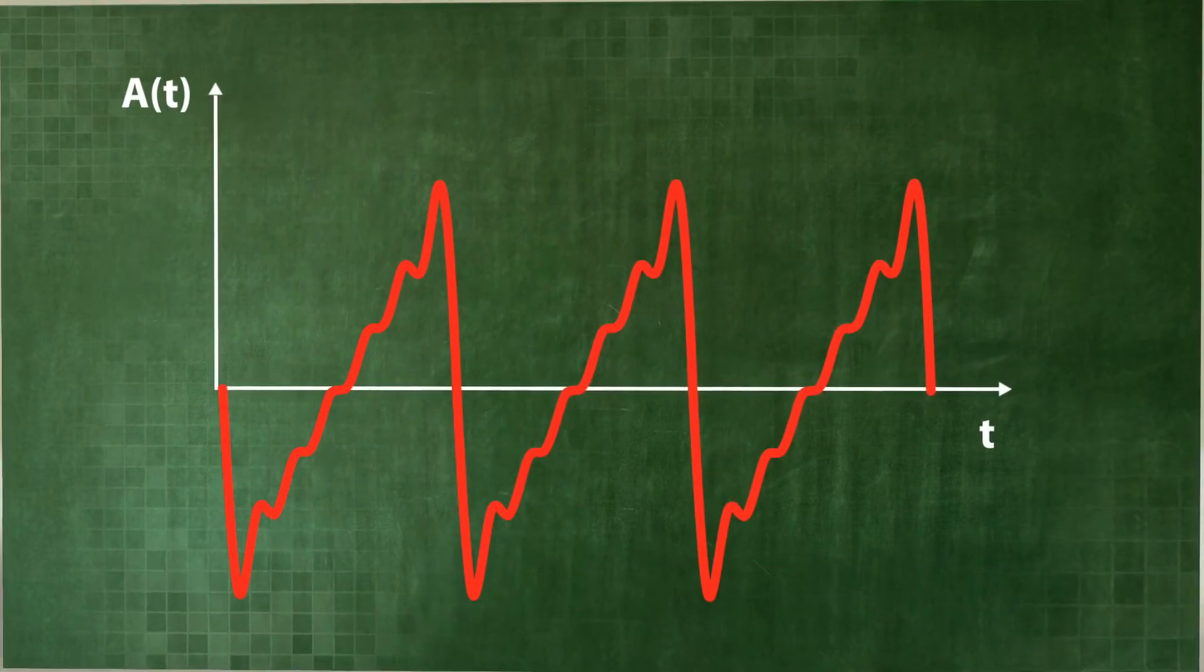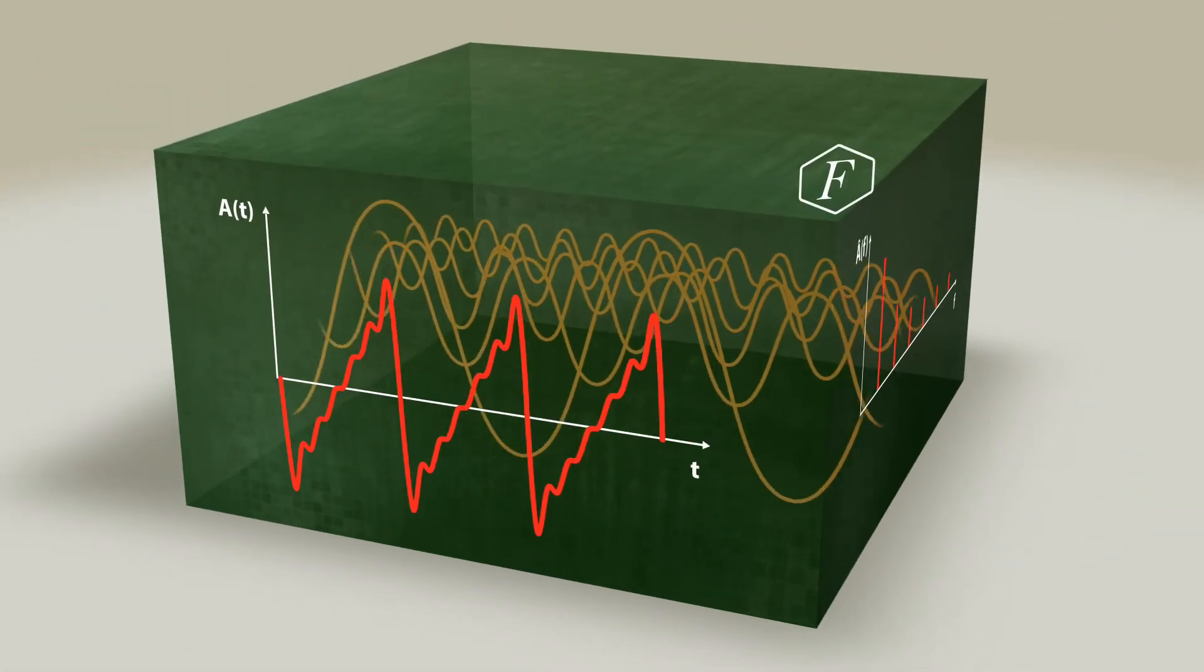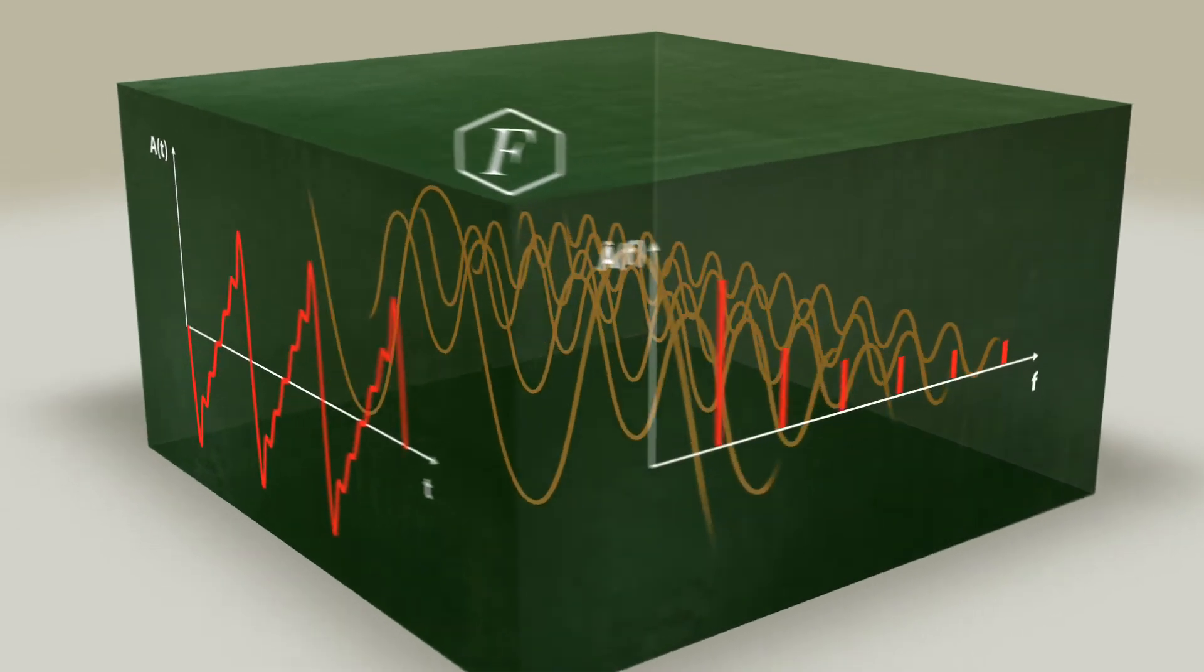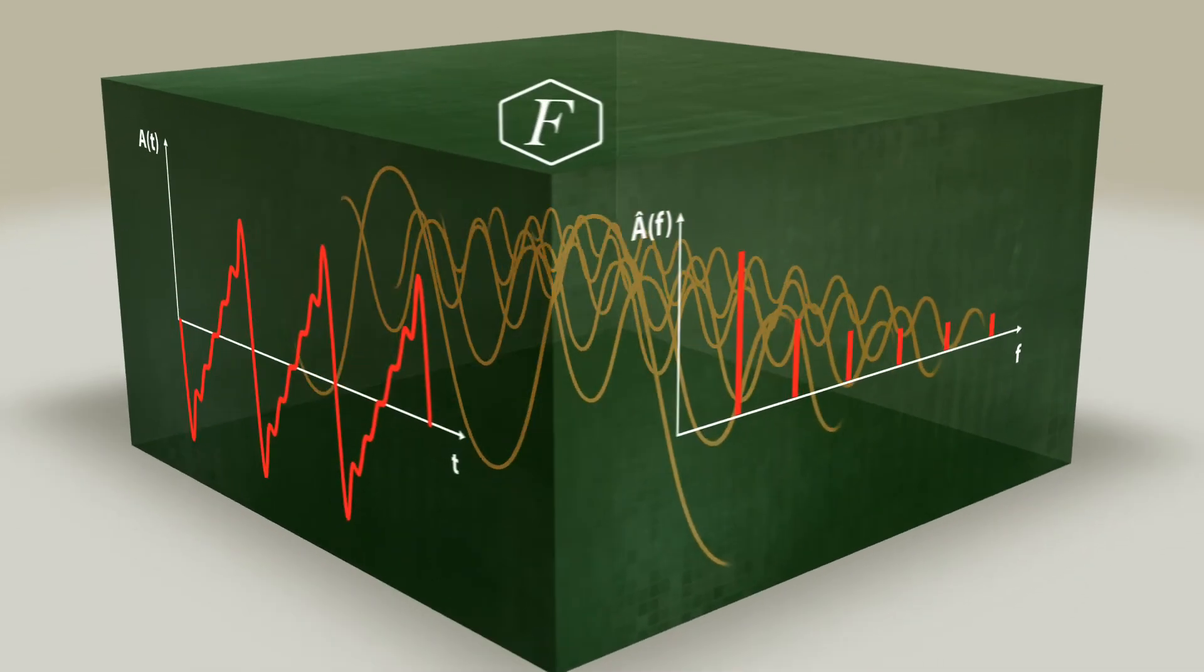The mathematical operation that associates the frequencies and their respective amplitudes with the time course is the so-called Fourier transform. Named after French mathematician Fourier.